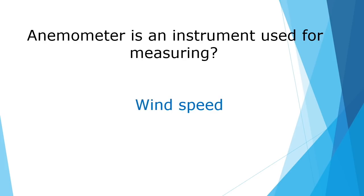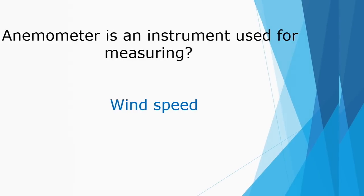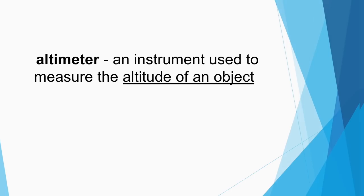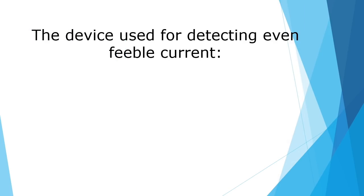An anemometer is an instrument used for measuring wind speed. An altimeter is an instrument used to measure the altitude of an object. A galvanoscope is the device used for detecting even a feeble electric current.